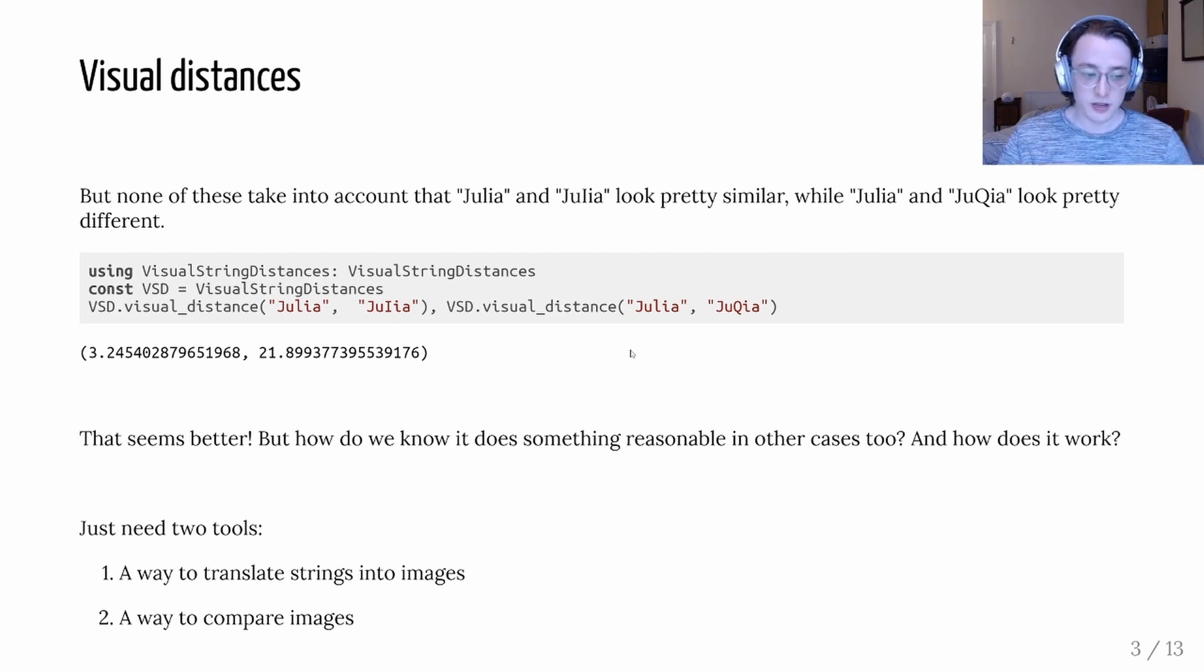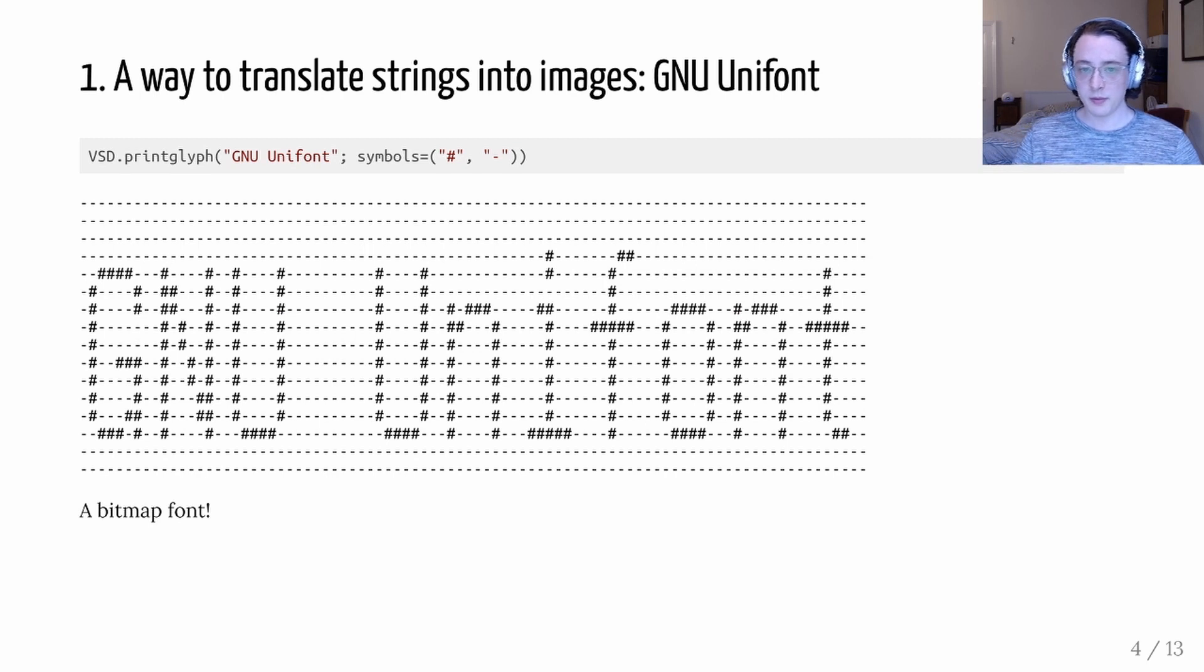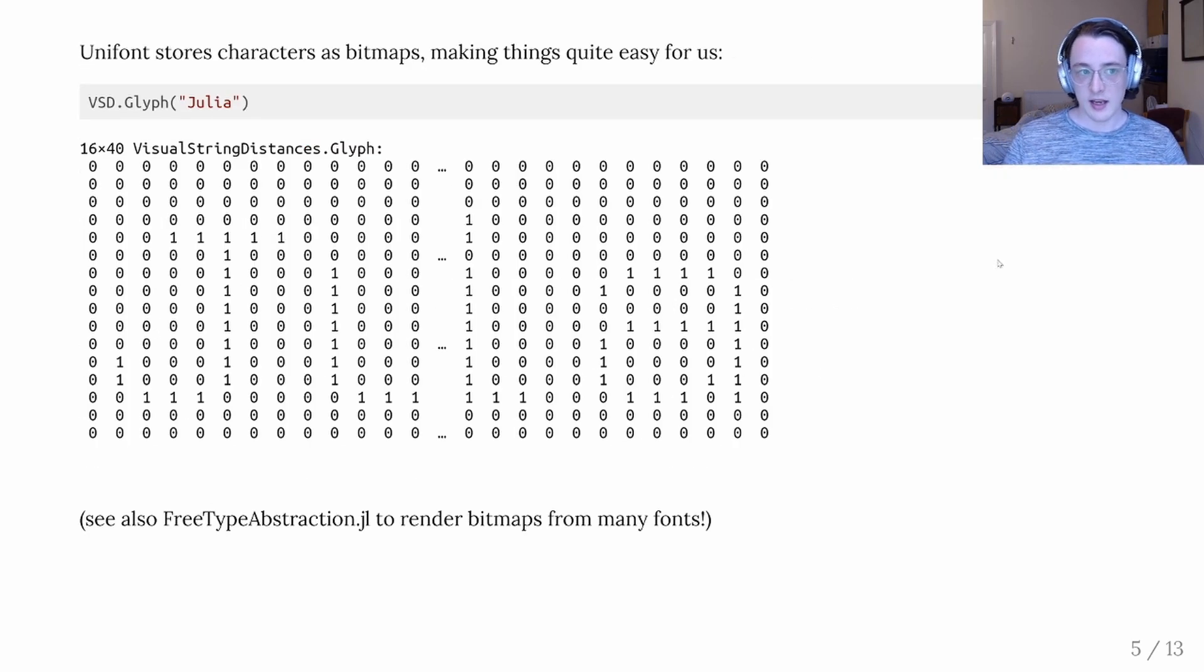So we just need two tools. We need a way to translate strings into images, and then we need a way to compare images. So the first one will be provided by GNU unifont. So this is a bitmap font that represents each character as a matrix of zeros and ones. And here I've kind of rendered it out with these hashtags and hyphens. And here we can see the actual bitmap for Julia. So it's a 16 by 40 matrix of zeros and ones. So it's kind of low resolution.